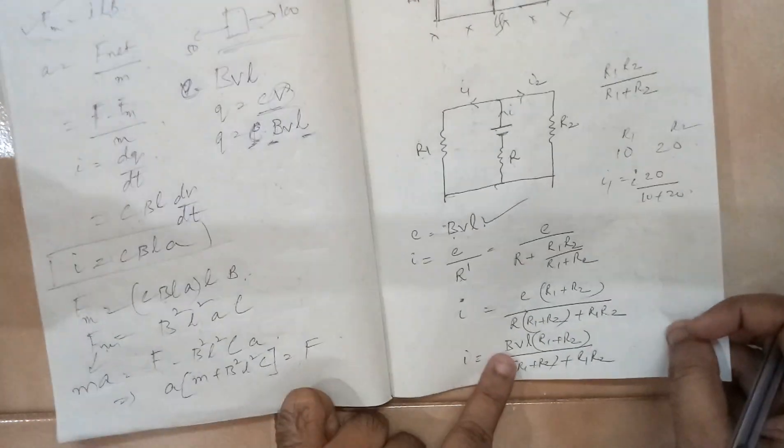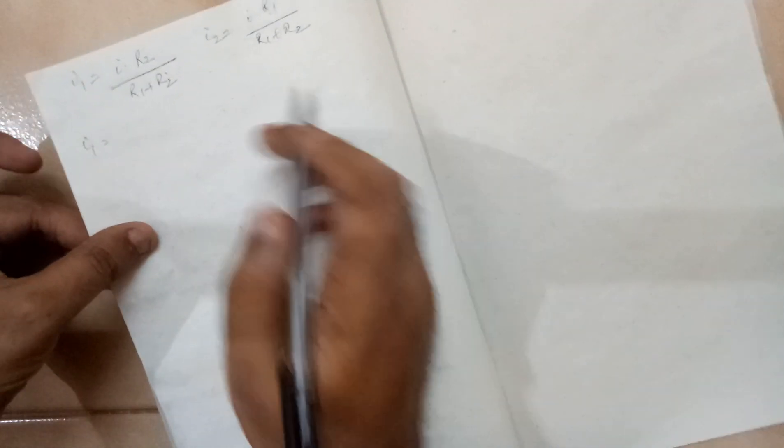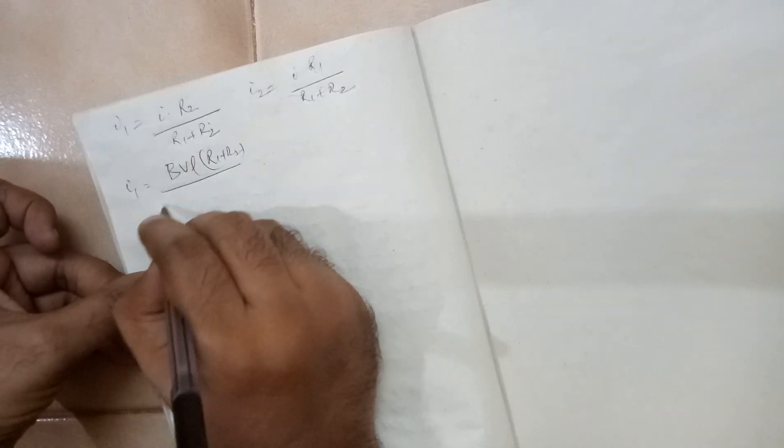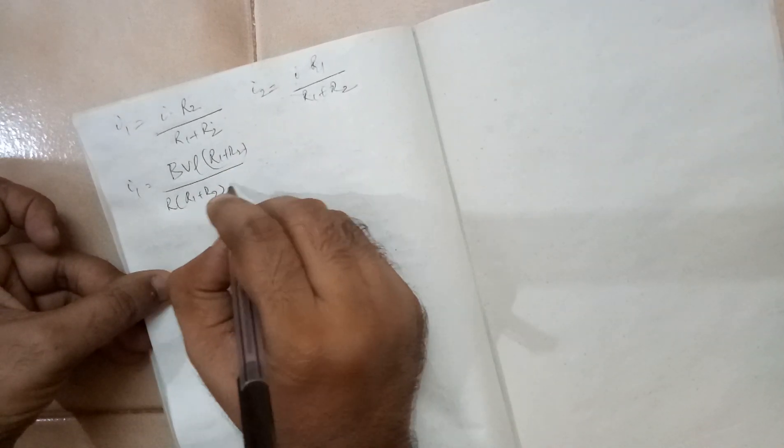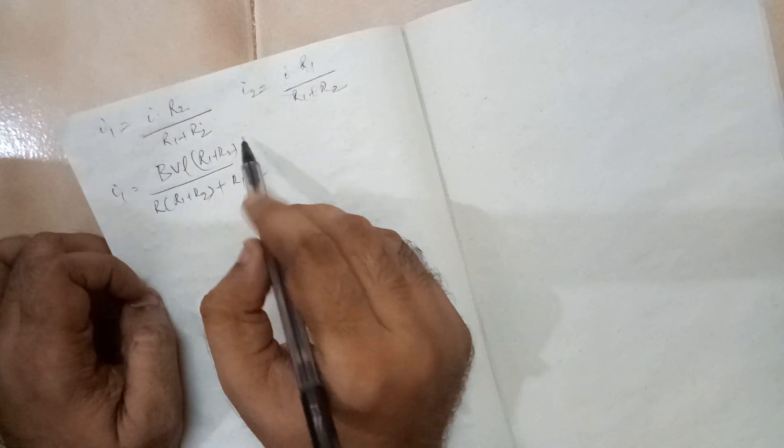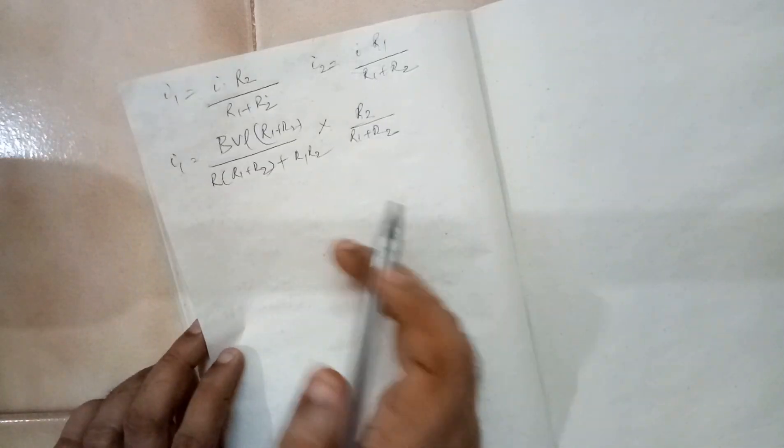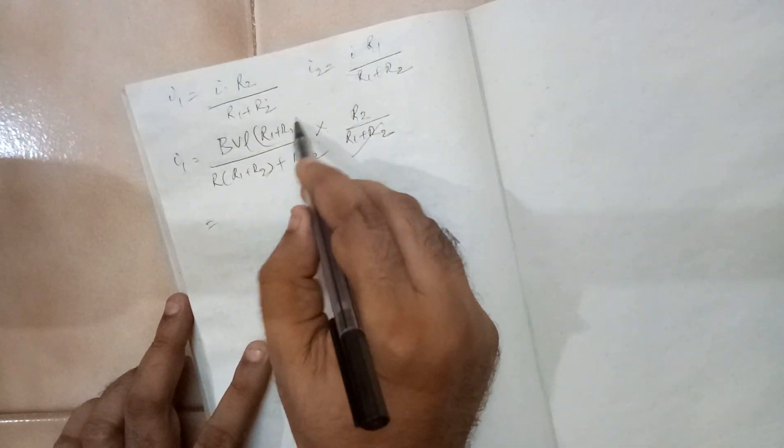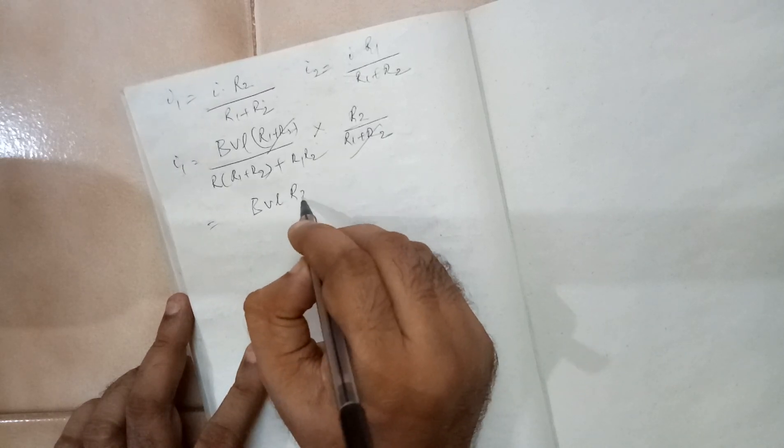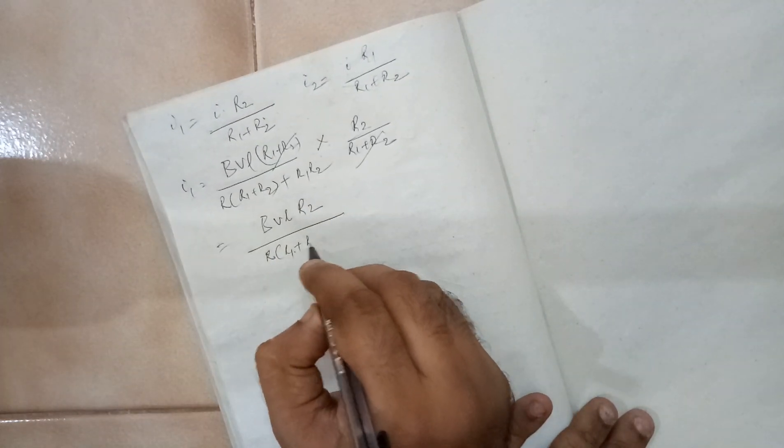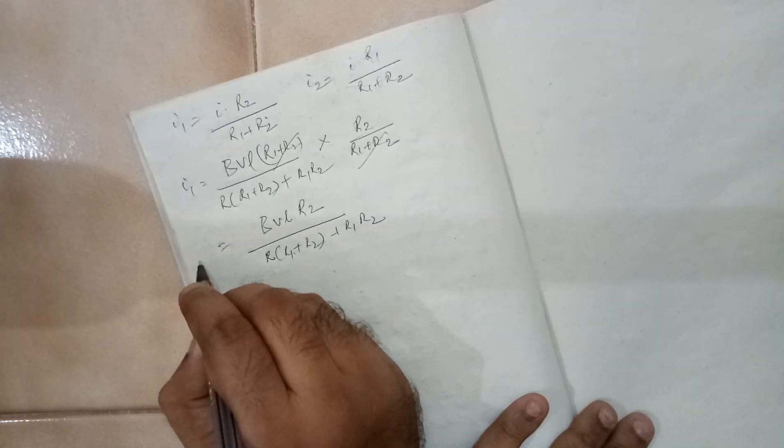Let us put the values here. I, we have got this much: BVL into R1 plus R2 divided by R into R1 plus R2 plus R1, R2. This is the value of I multiplied by R2 divided by R1 plus R2. So here this and this goes off. We get BVL R2 divided by R into R1 plus R2 plus R1 R2. This is the value of I1.